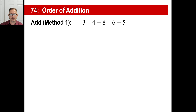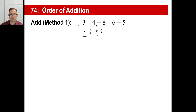Just do two at a time — that's all you ever need to do, no matter if there's fifteen in a row. Negative three plus negative four — both the same sign — so you take the absolute values and add them. Three plus four is seven, then you take the same sign from both of them. Negative seven. Now we're going to add eight to that. Negative seven plus eight — different signs — so we subtract the absolute values. Eight minus seven is one. That is farther away from zero, so it's going to be a positive one.